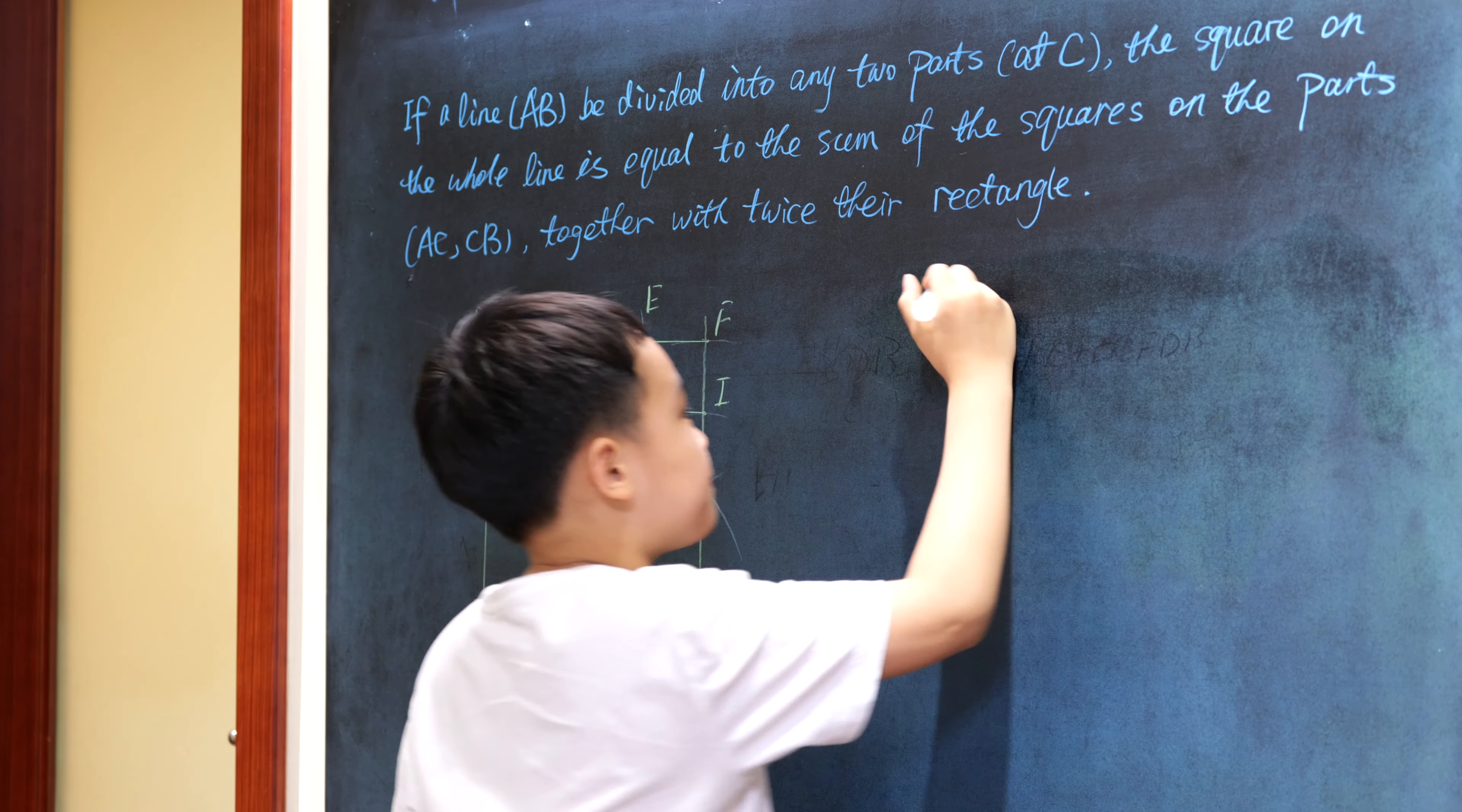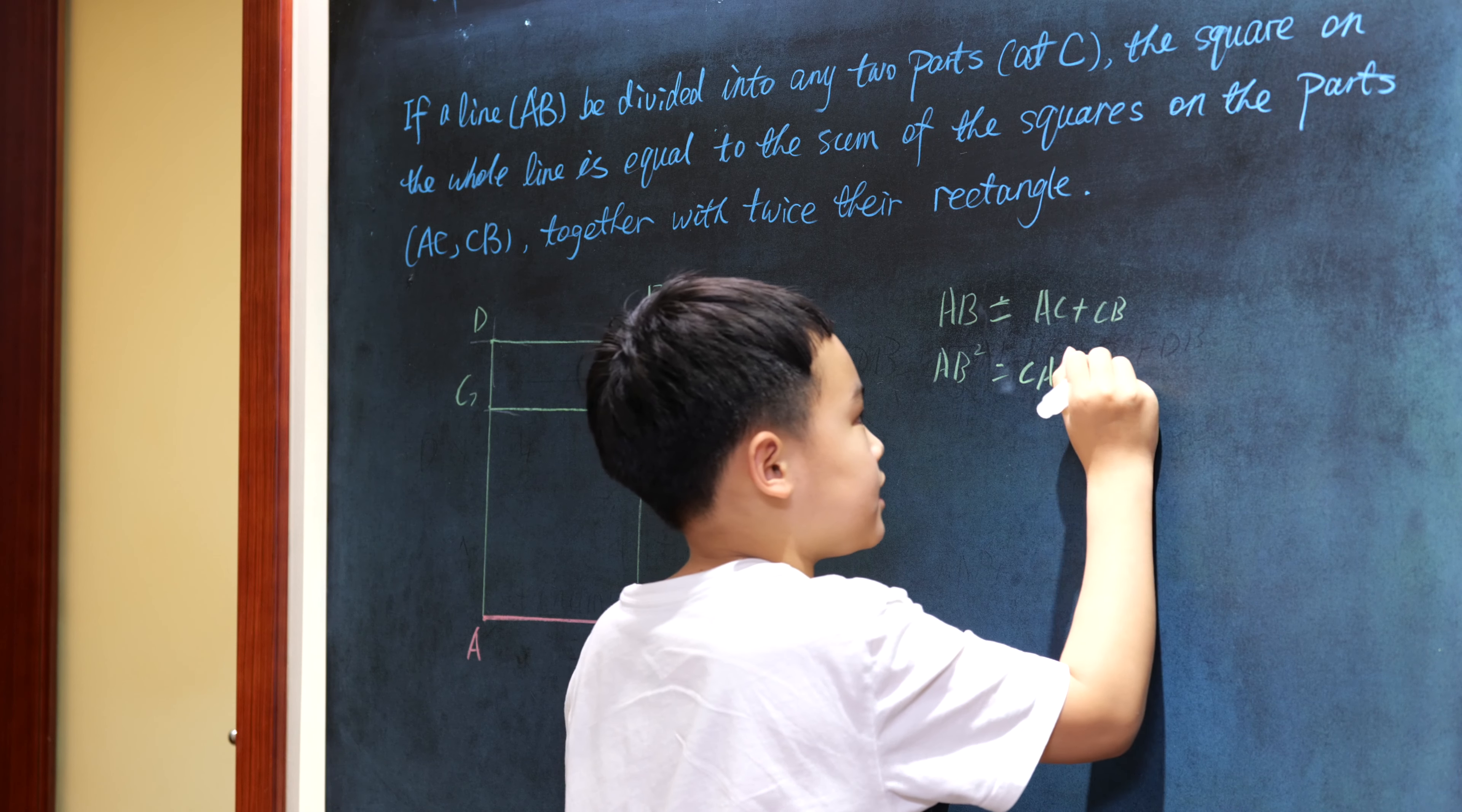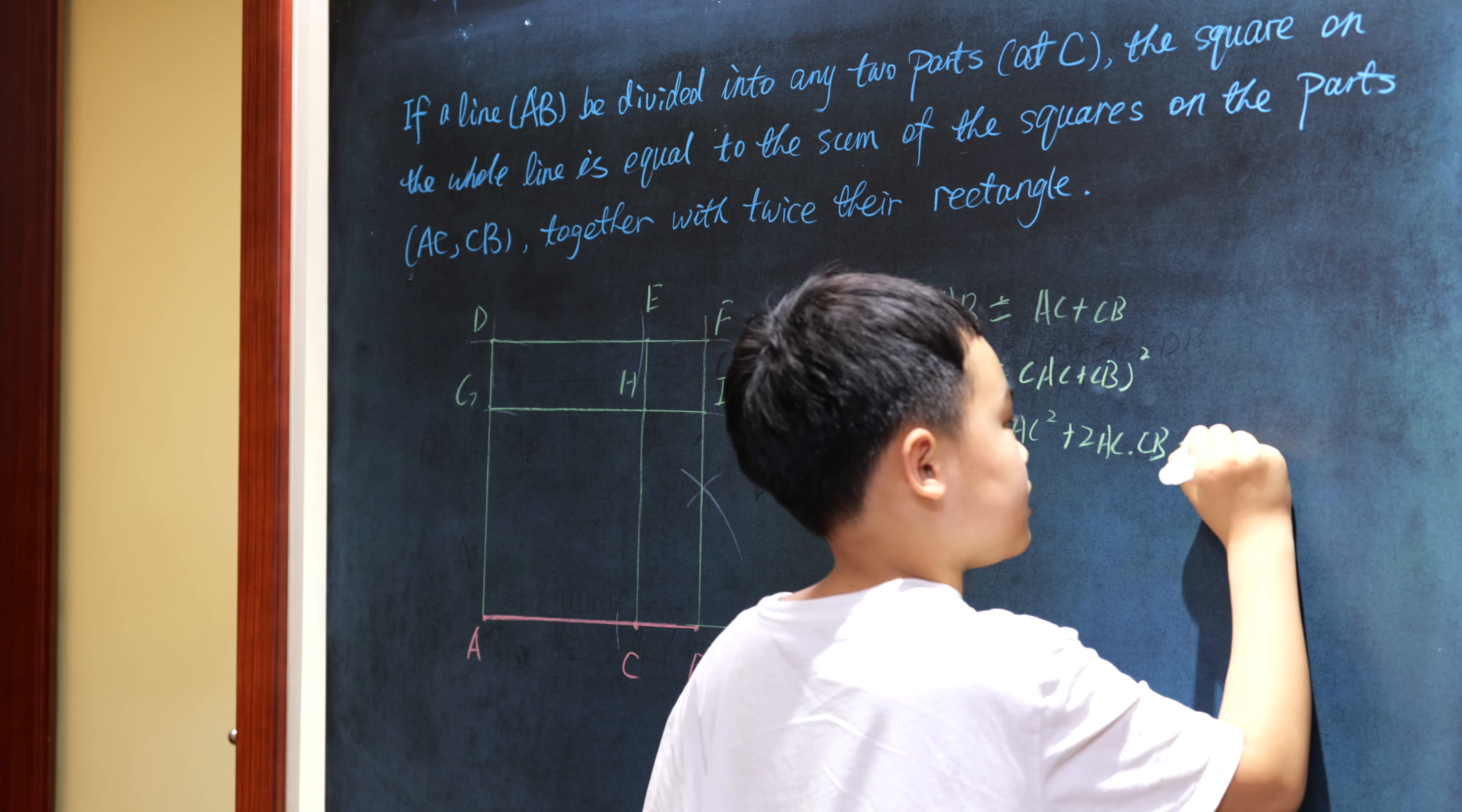Now, because AB is equal to the sum of two lines AC and CB, we'll square both sides of this equation. Then we get the square of AB equals the square of AC plus two AC times CB plus the square of CB.